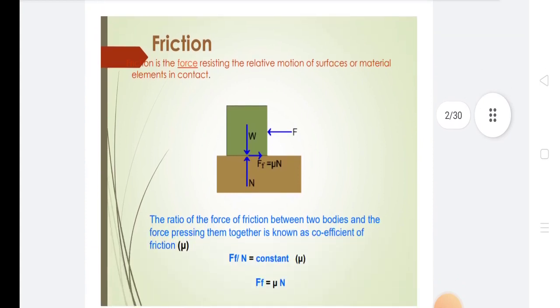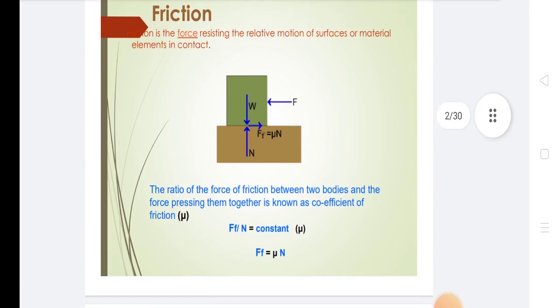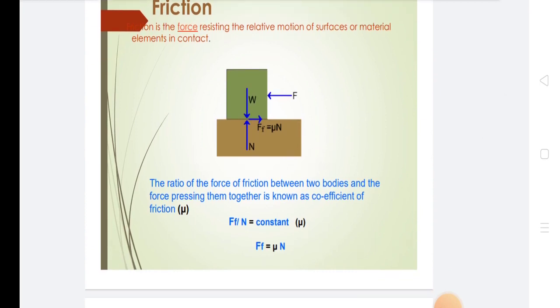First, we discuss friction. Friction is the force resisting the relative motion of surfaces or material elements in contact. The ratio of the force of friction between two bodies and the force pressing them together is known as coefficient of friction.